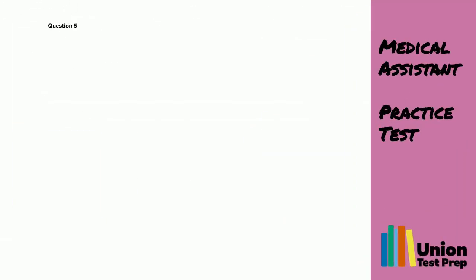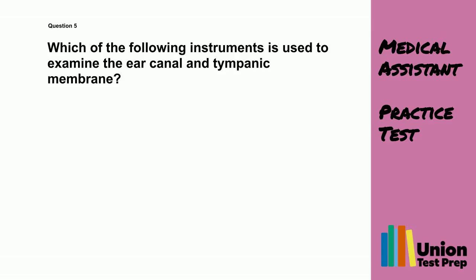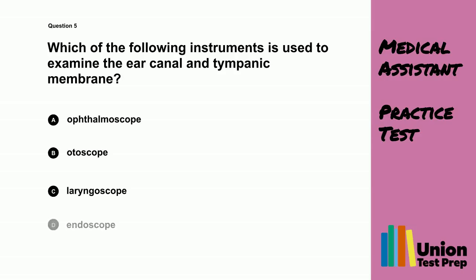Question 5. Which of the following instruments is used to examine the ear canal and tympanic membrane? A. Ophthalmoscope. B. Otoscope. C. Laryngoscope. D. Endoscope.